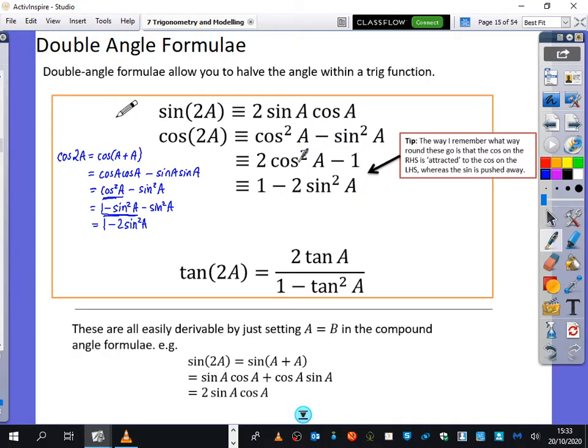If I wanted to come up with this other one, I could have replaced the sin squared here with 1 minus cos squared A, and that would give you the 2 cos squared A minus 1. I'm not going to do that one. I'll let you have a go at that. And then for the tan one,